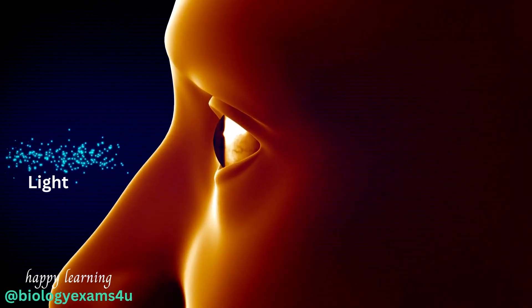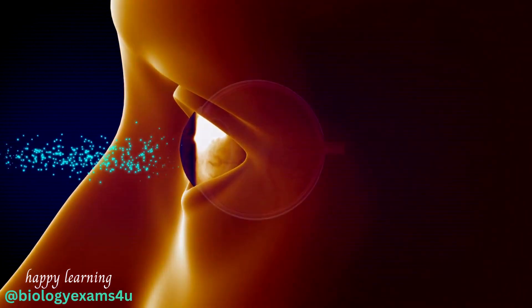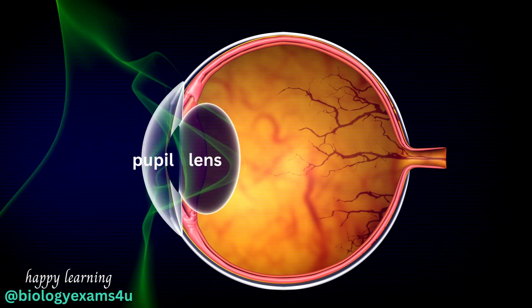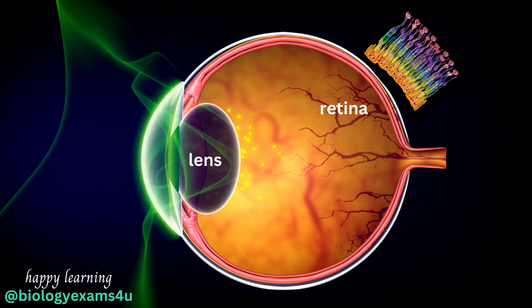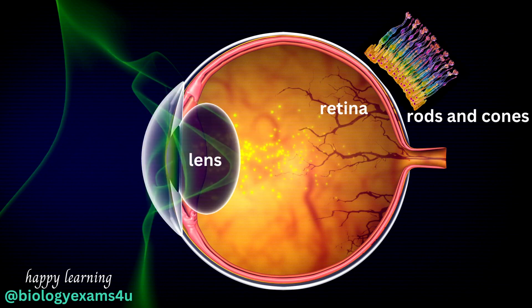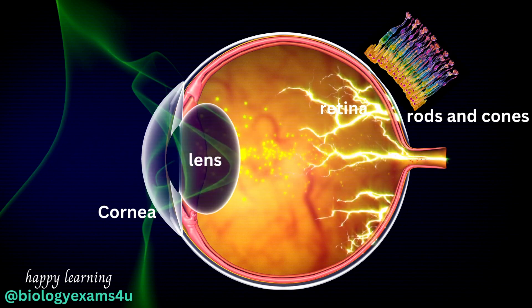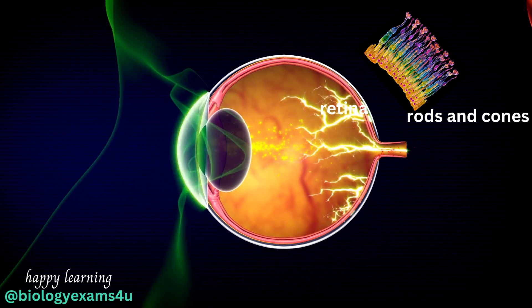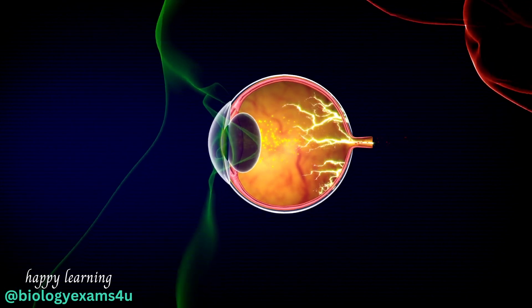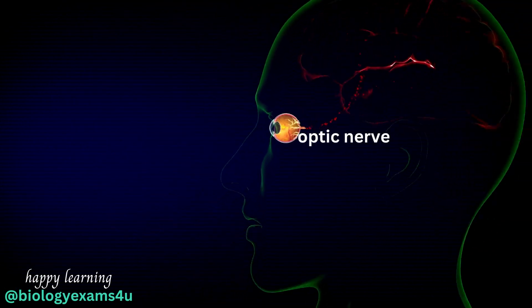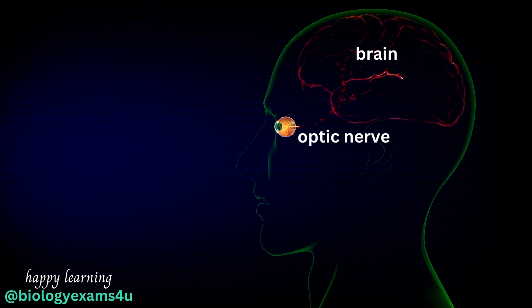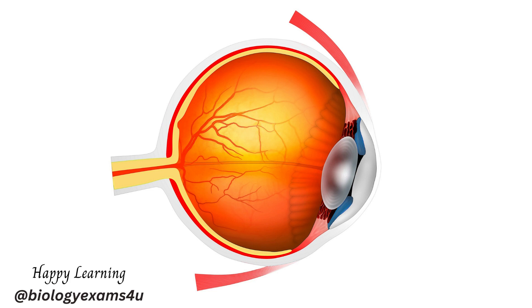First, light enters the eye through the pupil, then the lens focuses it onto the retina. The retina is covered with sensitive photoreceptors called rods, for dim light, and cones, for bright light. When stimulated, the rods and cones send signals to the optic nerve and to the brain, where the visual information is processed to create the picture.